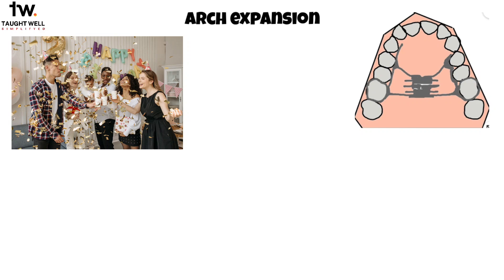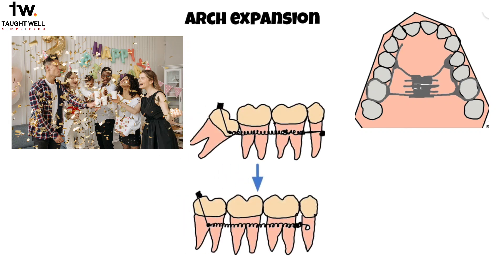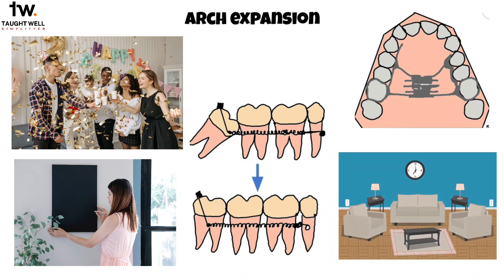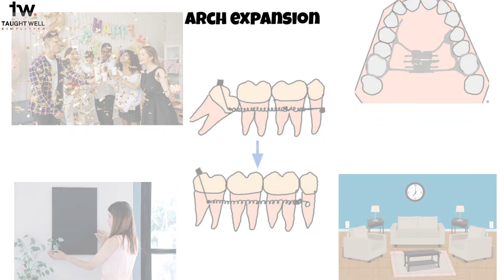Sometimes you need to make adjustments to specific areas. For example, if you notice a corner of the room is crowded, you can derotate or upright tilted teeth, just like straightening a leaning lamp or a slanted picture frame. By making these adjustments, you ensure that everything in the room is aligned and balanced, just as you strive for proper alignment of teeth.